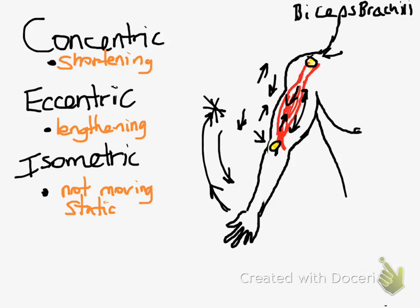We can take this concept to any muscle in the body — the deltoid muscle, the quads for knee extension and flexion. If you bring your legs straight out, your quads are shortening — they're concentric. If you're bending your knee, that would be eccentric lengthening of your quadriceps. It's important to know the origins and insertions of these muscles so that you can tell where the points would be getting shorter or longer.